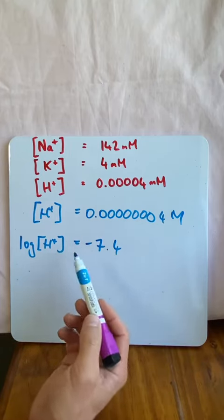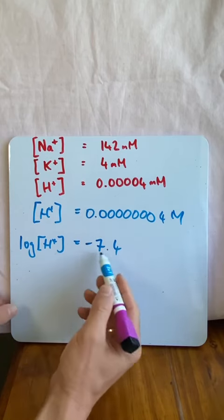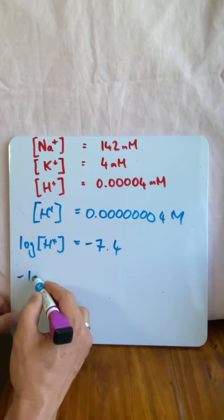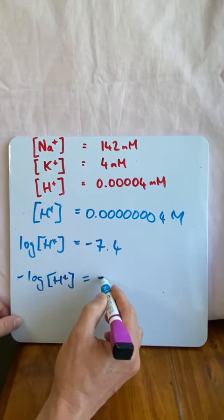Now we can't write on a medical chart the value of something being negative. So to get rid of the negative on that side, we get rid of the negative on this side. So do the negative log of hydrogen equals 7.4.